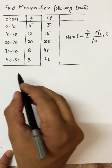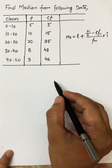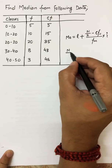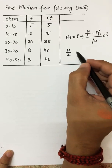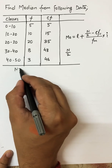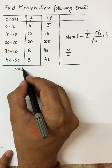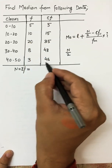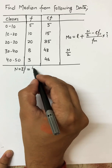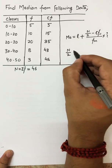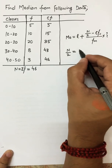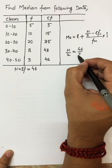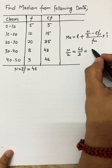The next step after calculating cumulative frequency is to calculate the value of N by 2. N equals the summation of F, the sum of all frequencies, which is 46. So N by 2 becomes 46 divided by 2, which equals 23.